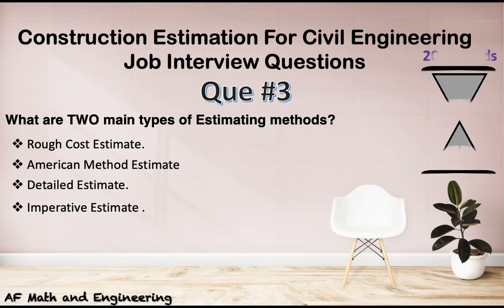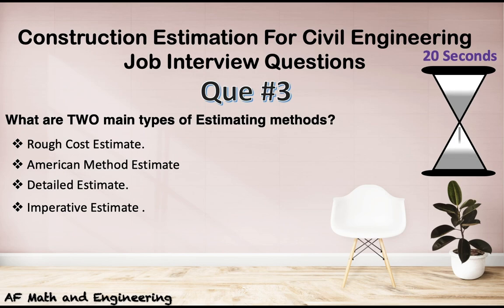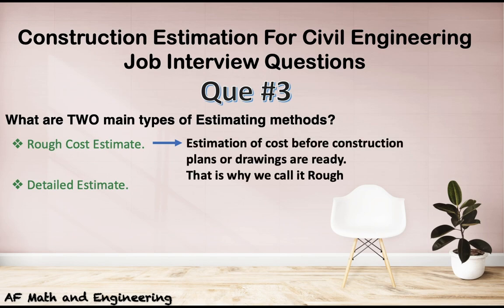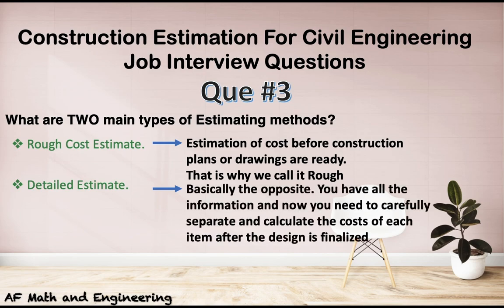What are the two main types of estimating methods? Time is up — hope you enjoyed the music. We have a rough cost estimate and a detailed estimate. A rough cost estimate is done before any plans or drawings; that's why we call it rough — you don't have a lot of information. A detailed estimate is the opposite: you have all the information and carefully calculate the cost of each item after the design is finalized.